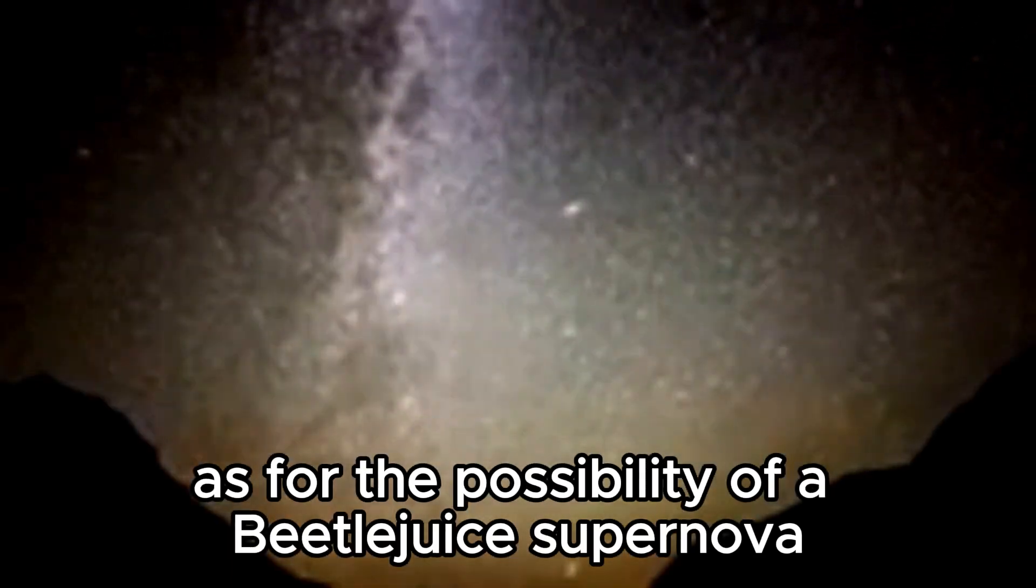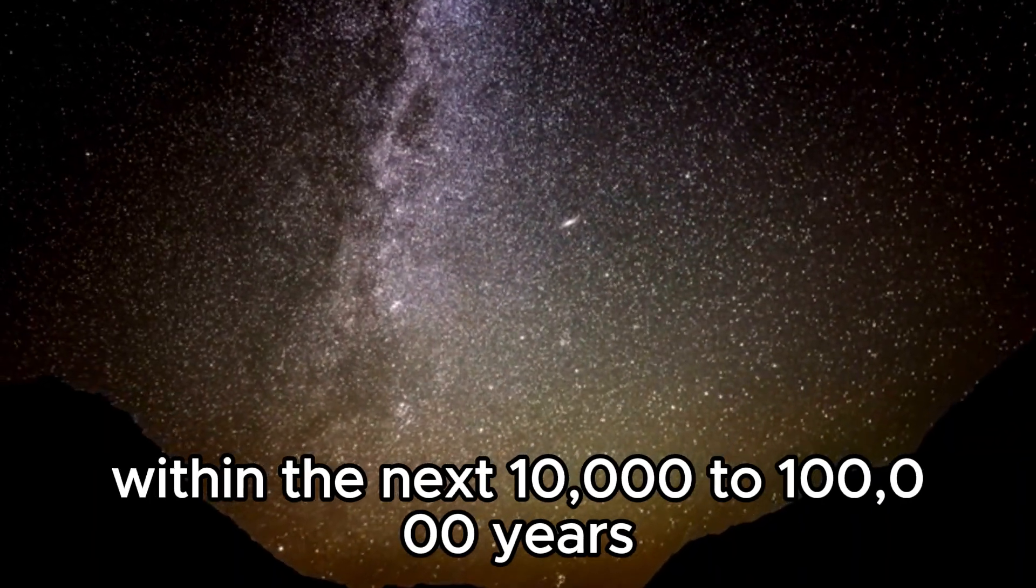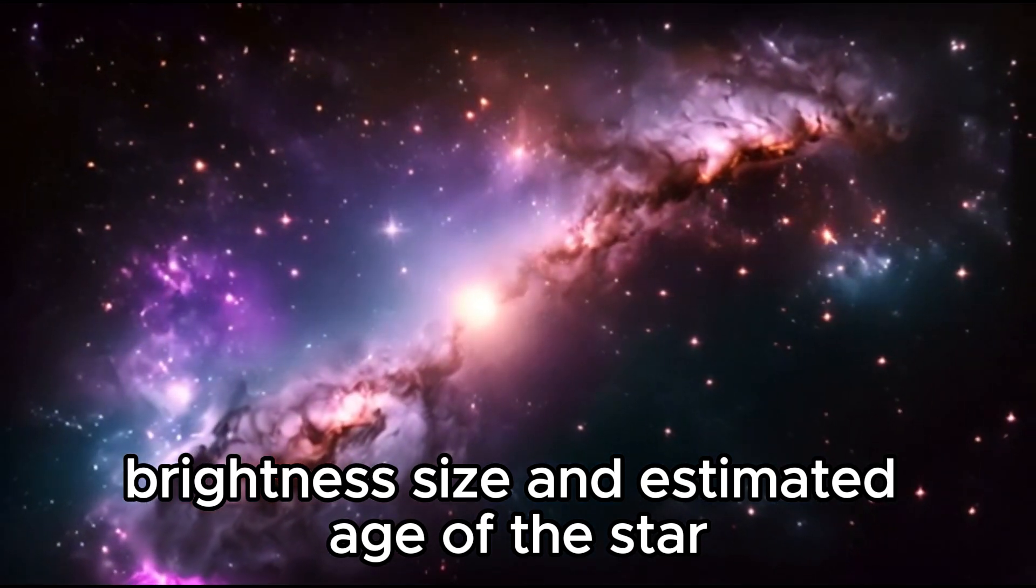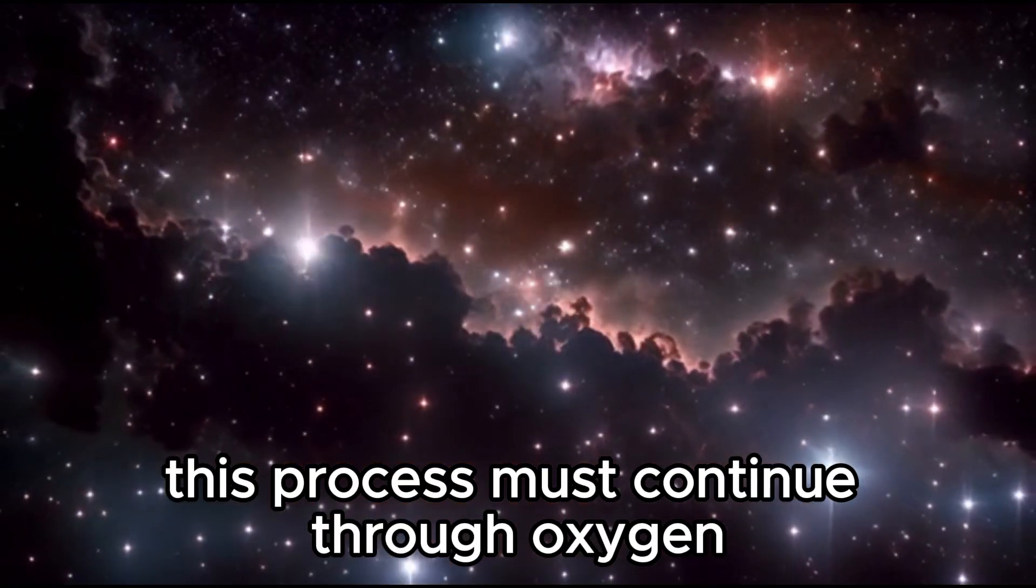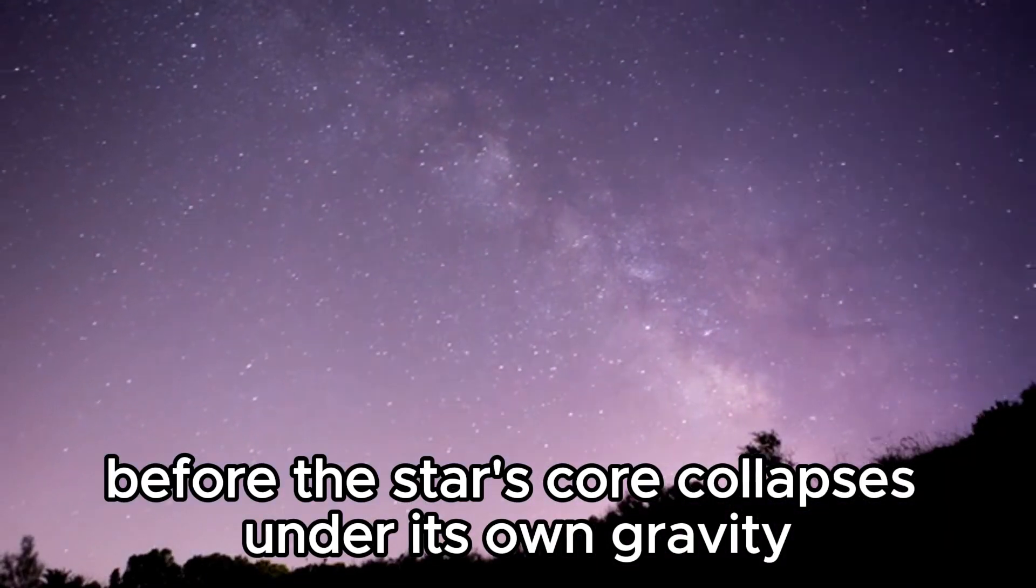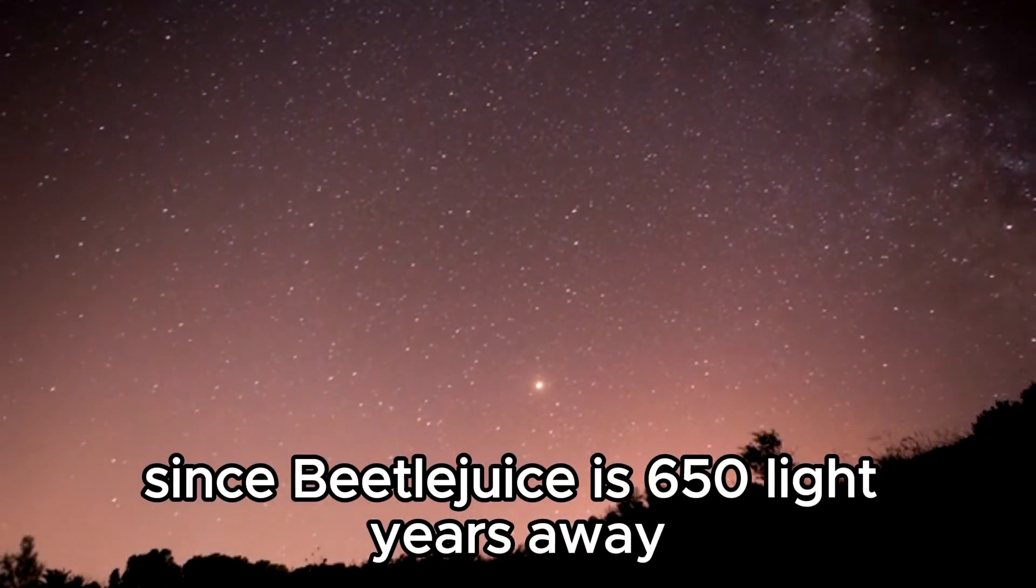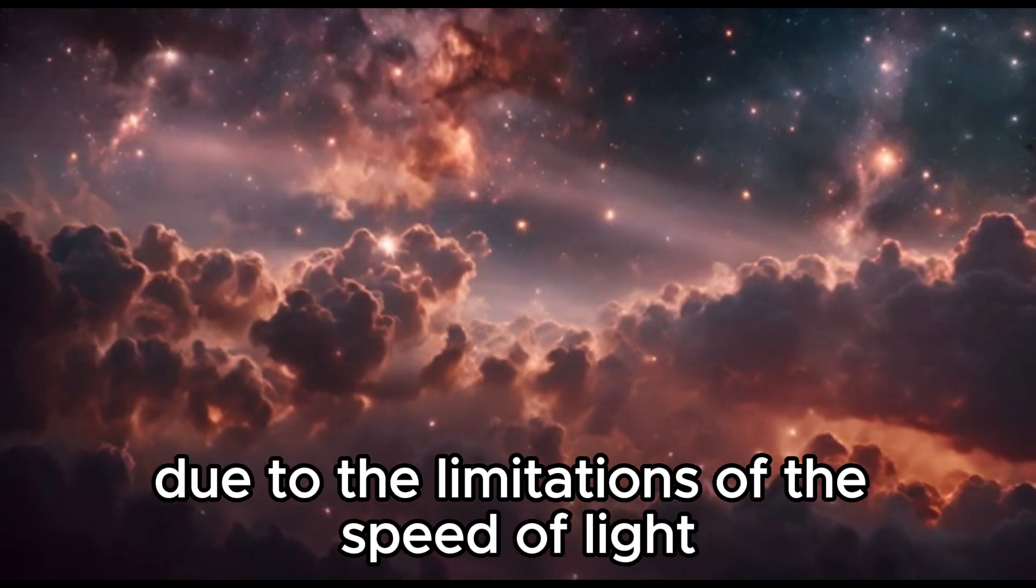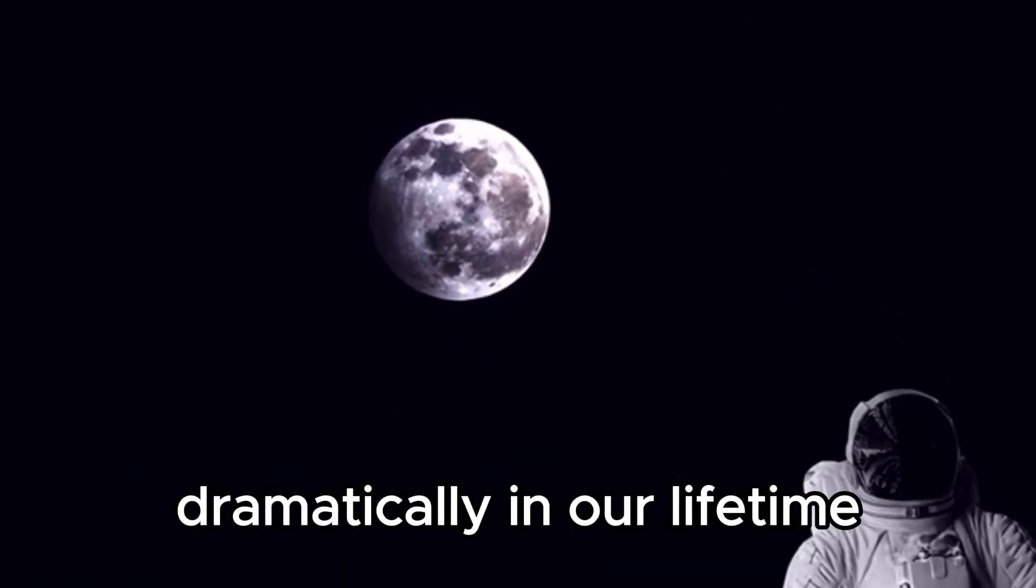As for the possibility of a Betelgeuse supernova, astronomers speculate that it could happen any time within the next 10,000 to 100,000 years. Based on factors such as the color, brightness, size, and estimated age of the star, scientists say that Betelgeuse is currently in the early stages of helium-carbon fusion. This process must continue through oxygen, silicon, and finally iron before the star's core collapses under its own gravity, leading to a cataclysmic explosion. Since Betelgeuse is 650 light-years away, any supernova events happening now will not be visible to us until 650 years later, due to the limitations of the speed of light. Therefore, it is highly unlikely that we will see a star die dramatically in our lifetime.